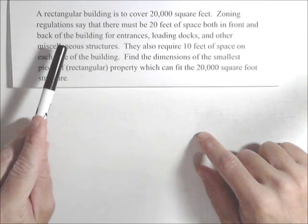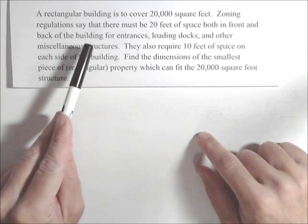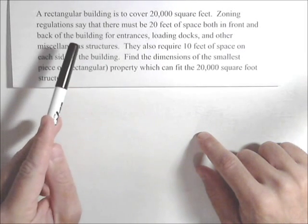Now zoning regulations say that there must be 20 feet of space both in front and back of the building for entrances, loading docks, and other miscellaneous structures.